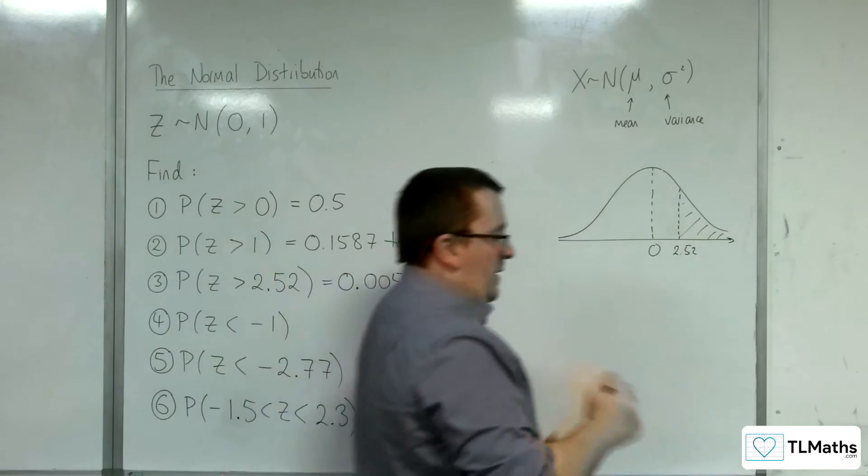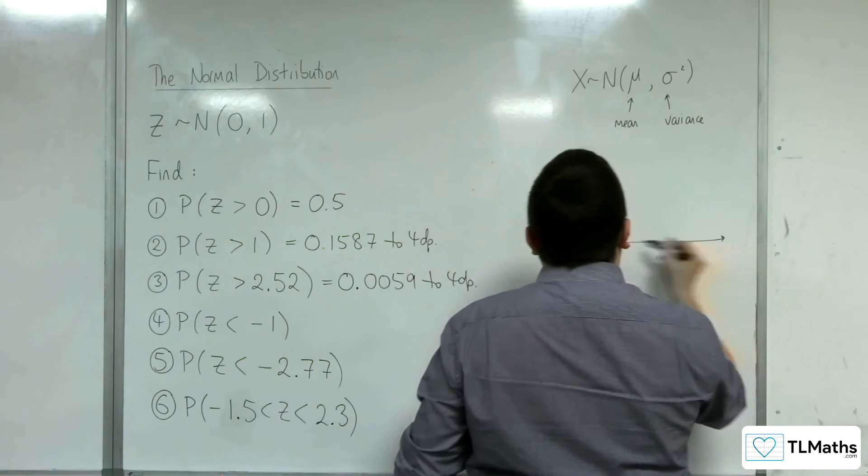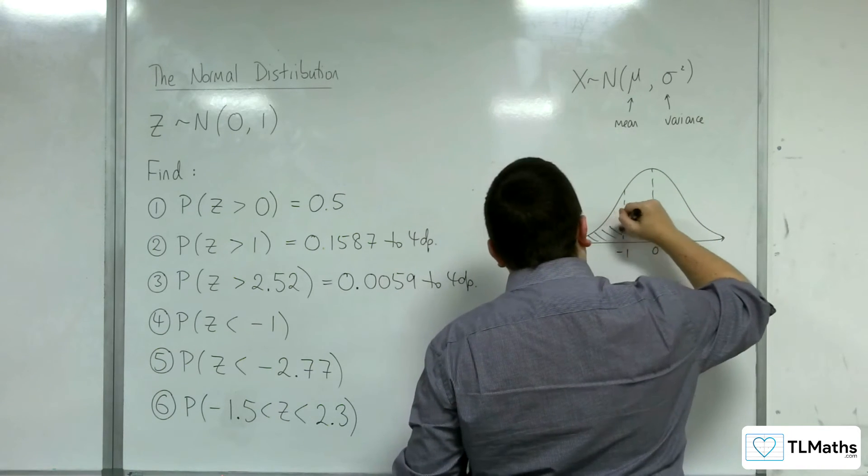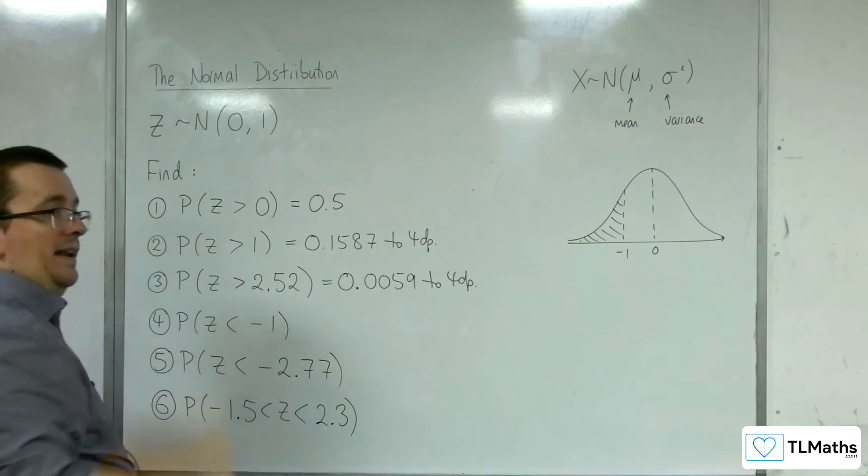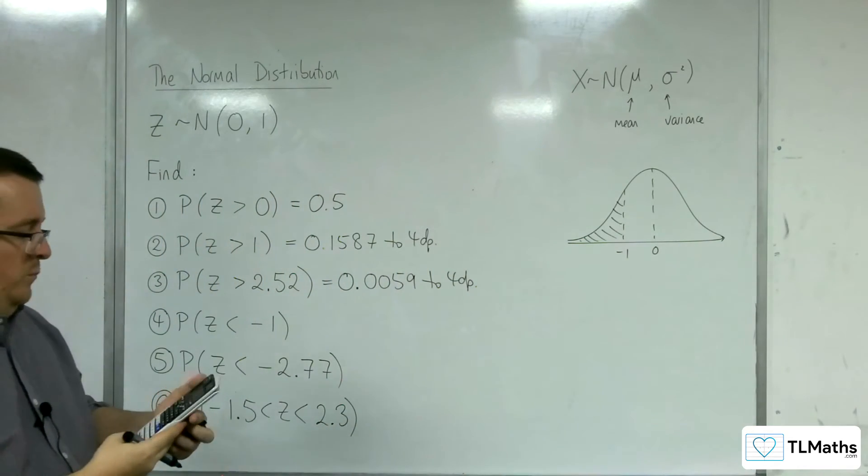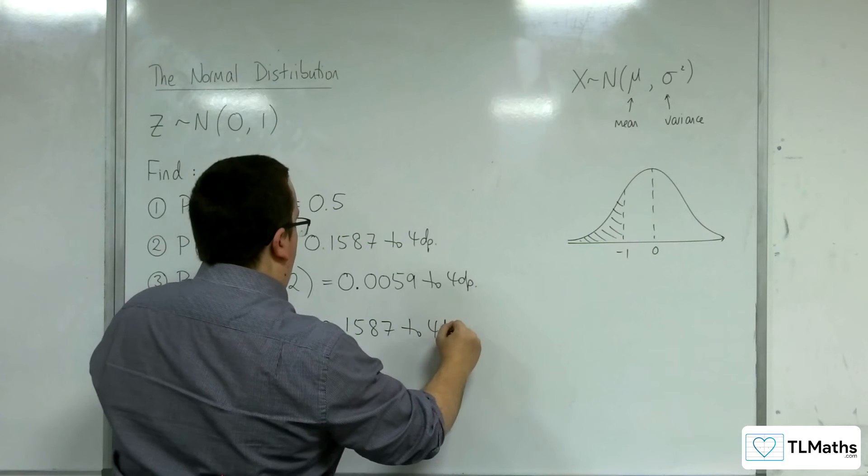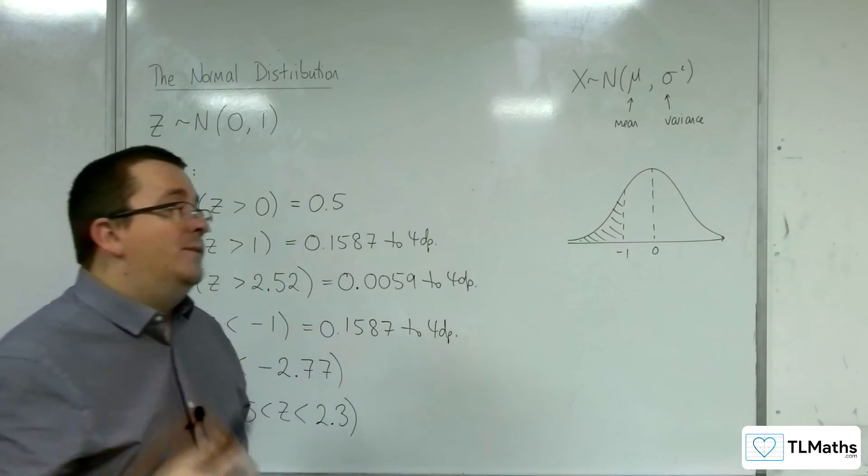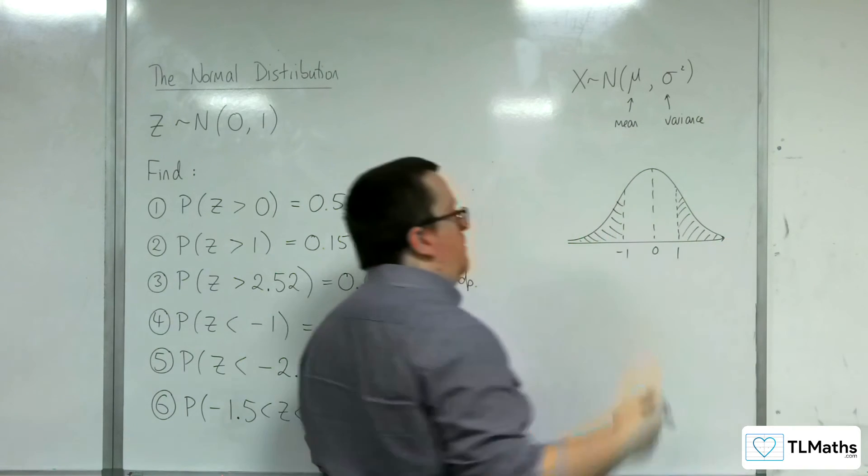Right. Z is less than minus 1. Let's redraw this diagram. So there's 0, there's minus 1. So the probability of Z being less than minus 1. Well, the lower value is a low value down here, down to the left, so minus 10 would do. The upper value is minus 1. Press equals. And we get 0.1587 to 4 decimal places. Now you might recognize this. That's the answer that we got to number 2. That's because the graph is perfectly symmetric. And we're getting the same value because less than minus 1 is actually exactly the same as probability of Z being greater than 1.